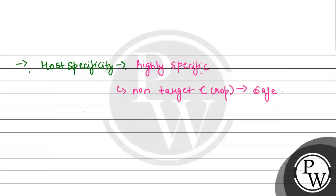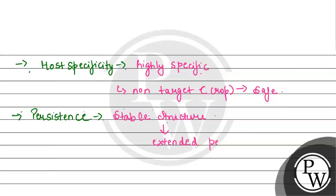Next, let's look at persistence in the environment. The structure of NPV is stable — it has a stable polyhedral structure. This stable structure allows it to persist in the environment for extended periods. It can remain in a normal environment for a long time, and it can remain effective over multiple pest generations.